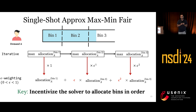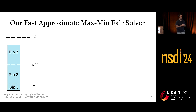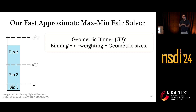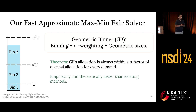The remaining challenge is how to assign bin sizes. This approach is general and applies to different bin strategies, but we choose to geometrically increase bin sizes to obtain the same guarantees as Swan. The intuition is that demands with higher allocation are less sensitive and can tolerate more unfairness. This leads to our Geometric Binner, combining binning, epsilon weighting, and geometric bin sizes. We proved Geometric Binner is alpha-approximate, meaning its allocation is always within alpha times the optimal max-min solution, where alpha is user-specified to trade off fairness for speed.